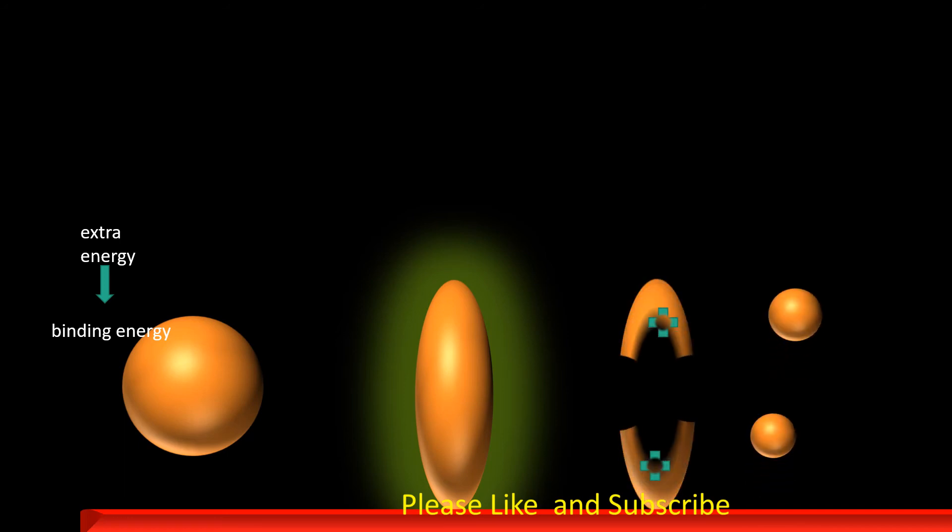As a result of these oscillations, the shape of the nucleus may change from spherical to ellipsoidal. If the extra energy is large, oscillations may be so violent that a critical stage may be approached. The nucleus is now dumbbell shaped.